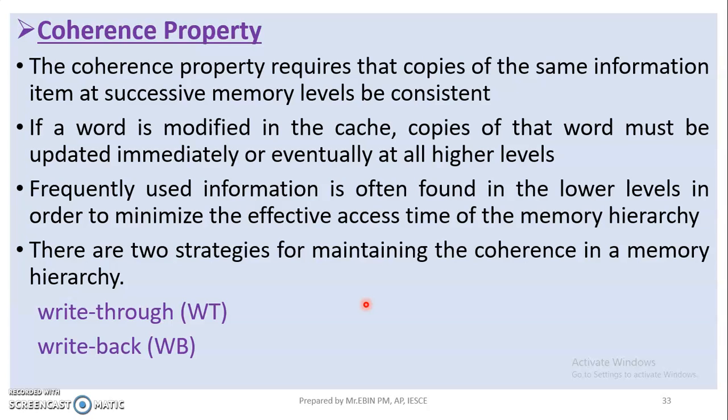The cache holds an original copy of data. If there are any changes made to that copy, those changes must be reflected back. If the changes are not propagated, the data will be inconsistent. If the changes are properly reflected, the data remains coherent. That is the coherence property.